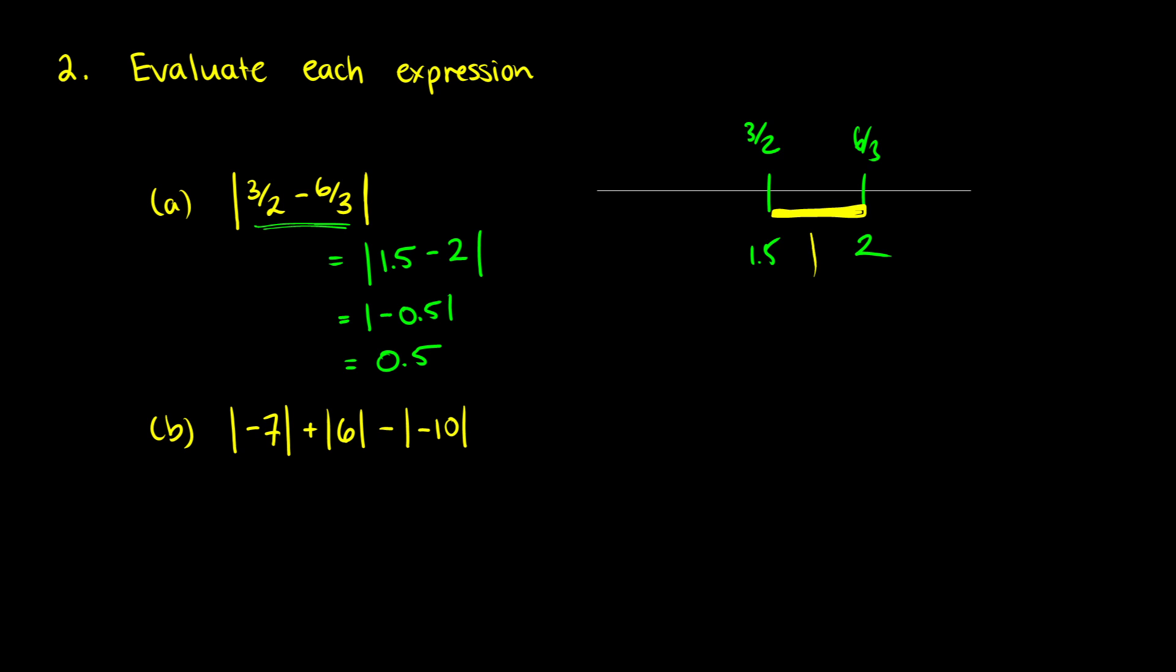Okay, this next one—we want the absolute value of negative 7 plus the absolute value of 6 minus the absolute value of negative 10. Well, before we add these, we have to take the absolute values first, and that's sort of what this is verifying that you understand.